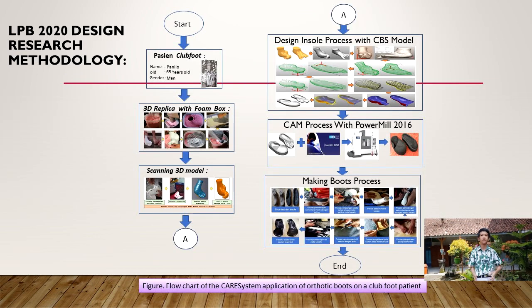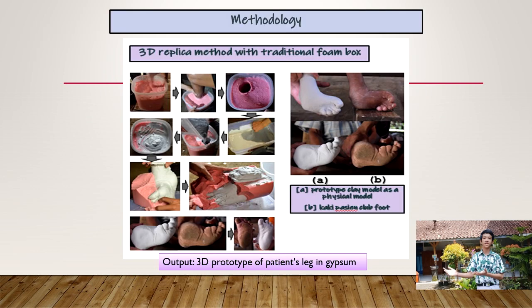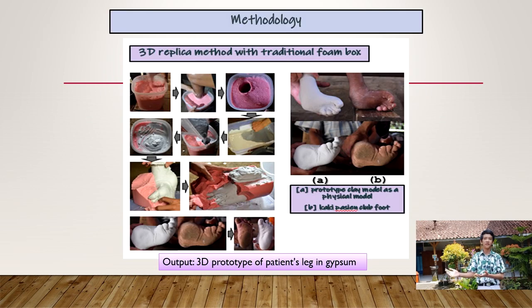Design research methodology: first is the start with the clubfoot patient; two, 3D replica from the foam box; then scanning to a 3D model; design process with a CBS model; then CAM process with PowerMill 2016; and then the last step is making the boot. Here are pictures of the 3D method with a traditional foam box, producing prototype A as a physical model and B, the fit of the clubfoot vision.